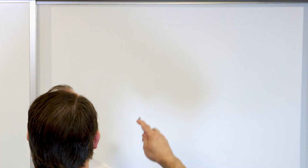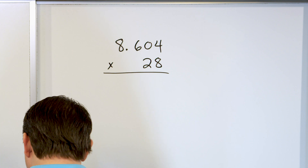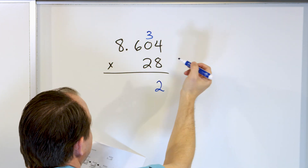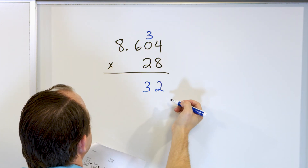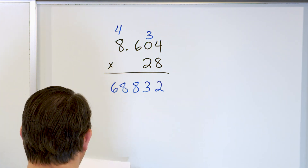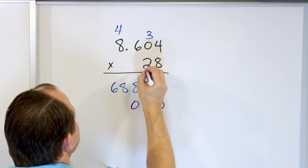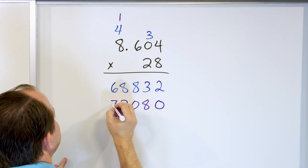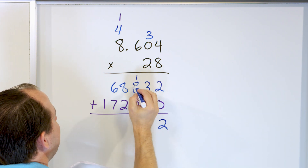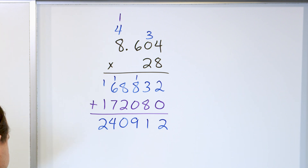For our next problem, let's look at 8.604 multiplied by the whole number 28. We pretend there is no decimal and multiply. 8 times 4 is 32, carry the 3. 8 times 0 is 0, plus 3 is 3. 8 times 6 is 48, carry the 4. 8 times 8 is 64, plus 4 is 68. That first line is 68,832. Now multiply by 2: drop a 0, then 2 times 4 is 8, 2 times 0 is 0, 2 times 6 is 12 carry the 1, 2 times 8 is 16 plus 1 is 17. Now we add: 2, then 8 plus 3 is 11 carry a 1, 8 plus 1 is 9, 8 plus 2 is 10 carry a 1, 7 plus 7 is 14, then 2 in front — giving us 2, 4, 0, 9, 1, 2.